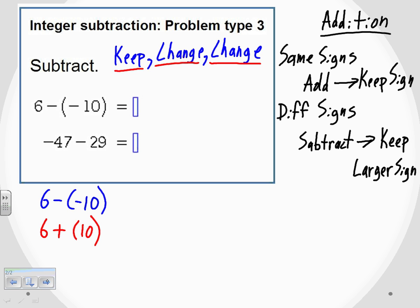So now we've turned this subtraction problem into an equivalent addition problem. Using our addition rules, positive 6 plus positive 10 — the signs are the same, so we add the digits: 16. And we keep the sign — positive and positive is still positive.